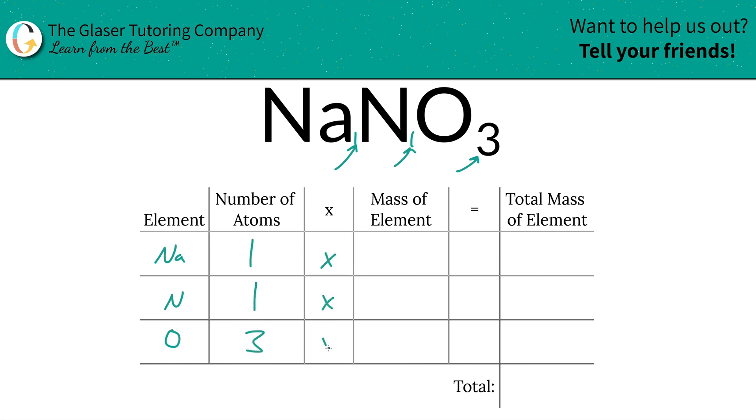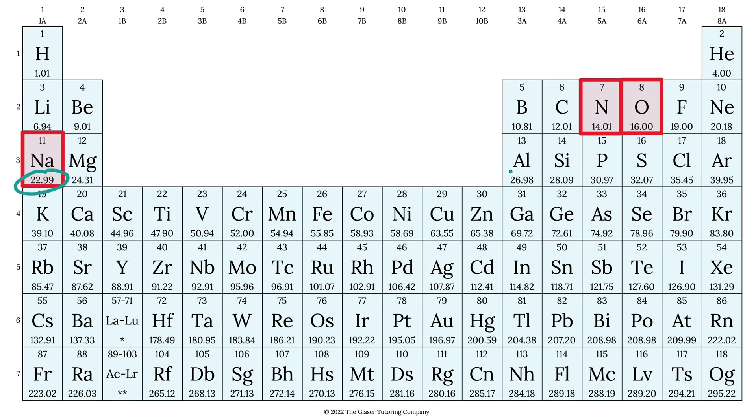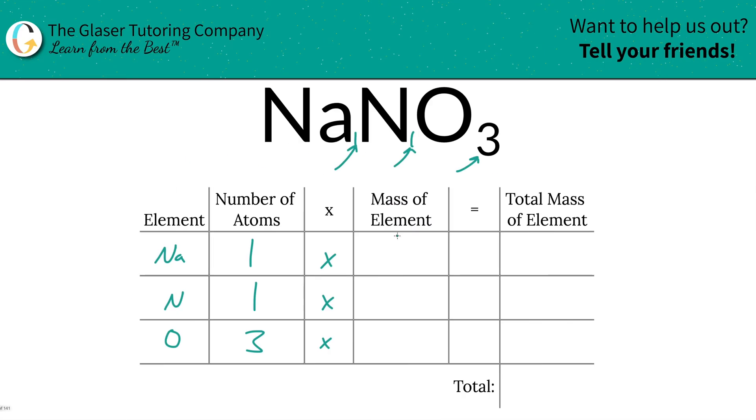So we're then going to take those number of atoms and multiply it by the mass of each element. That's where the periodic table comes into play. So sodium's mass is 22.99, nitrogen is 14.01, and oxygen is 16. So that's what we're going to write down, 22.99 for sodium, nitrogen was 14.01, and then oxygen was 16.